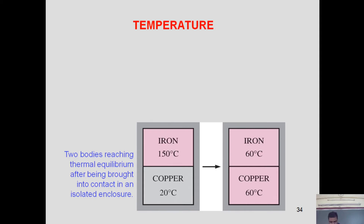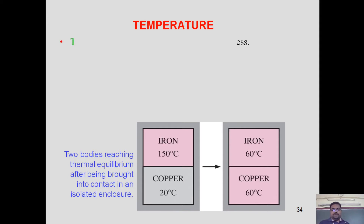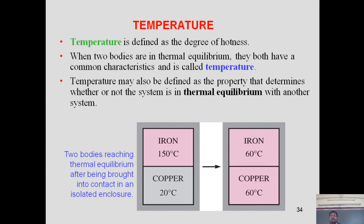Temperature is the parameter that distinguishes thermodynamics from any other science of engineering. In general, temperature is defined as the degree of hotness or coldness. When two bodies are in thermal equilibrium, they both attain a common property called temperature. Temperature may also be defined as the property that determines whether or not a given system is in thermal equilibrium with another system.